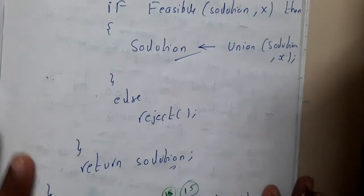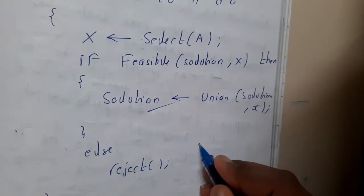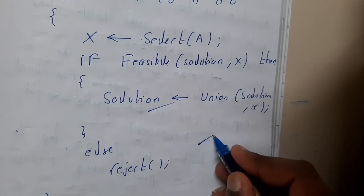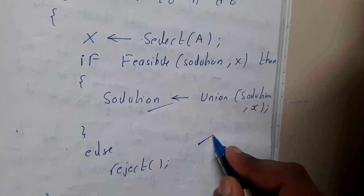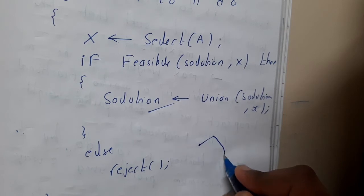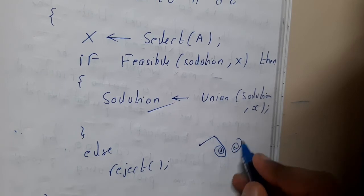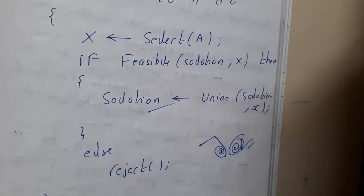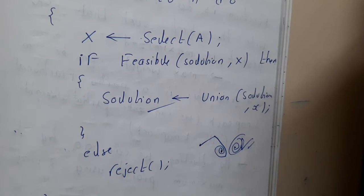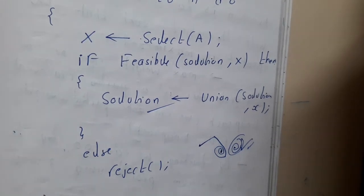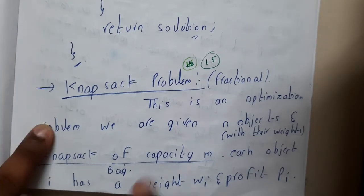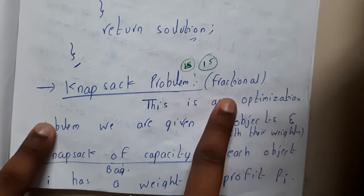You continue this until you complete the problem, then return the solution. So: you start, select something, check whether it is feasible, and if feasible you join it to the solution. You continue joining until the whole problem is completed, then return the result. This is the overview or outline of the greedy approach.